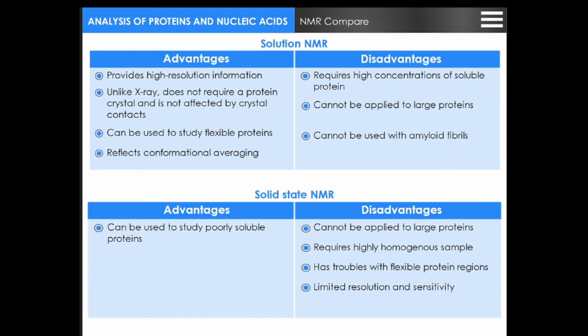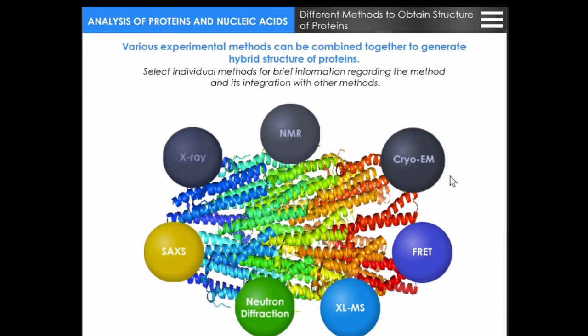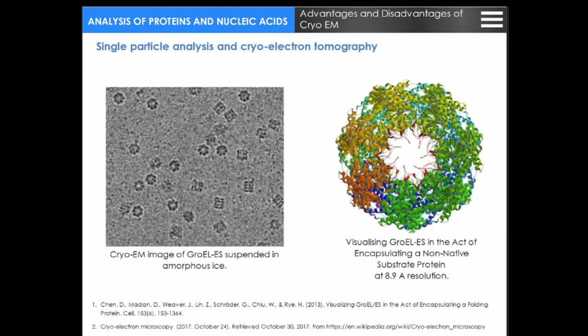Consider the advantages and disadvantages of solution NMR and solid-state NMR to decide which suits your experiment best. Cryo-electron microscopy is a form of transmission electron microscopy where the sample is studied at cryogenic temperatures. It allows observation of specimens that have not been stained or fixed in any way, showing them in their native environment. This is in contrast to X-ray crystallography, which requires crystallizing the specimen — which can be difficult — and placing them in non-physiological environments, which can occasionally lead to functionally irrelevant conformational changes.